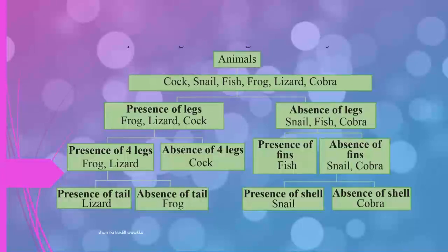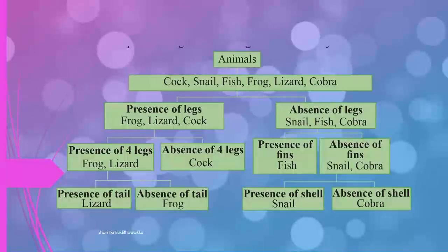Frog, lizard, and cork can again be divided into two parts: presence of four legs and absence of four legs. Frog and lizard can further be divided by presence or absence of tail. Lizard has presence of tail; frog has absence of tail.